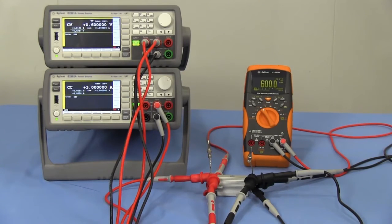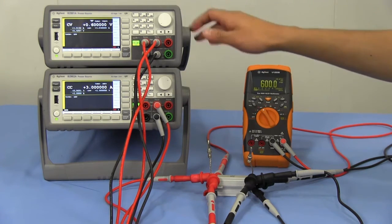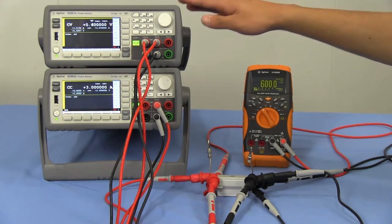First, let's measure the applied voltage. It's 600 millivolts. These two power supplies are working as one voltage source.